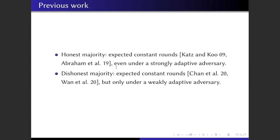Under honest majority, Katz and Koo, and later Abraham et al., showed that there exists expected constant rounds protocol, even under strongly adaptive adversaries. Under dishonest majority, Chen et al. first proposed solutions with polylog run complexity. This was later improved by Wan et al. to expected constant rounds. However, the solutions for dishonest majority only work under weakly adaptive adversaries.